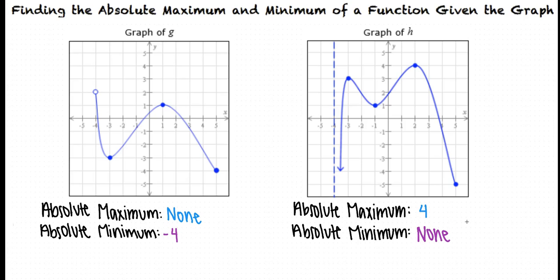The absolute maximum is the greatest y-coordinate of any point on the graph, and the absolute minimum is the least y-coordinate of any point on the graph. The graph may not have an absolute maximum or minimum if the function approaches positive or negative infinity on either end, or if the graph contains a hole which has a y-coordinate that is greater or lesser than the y-coordinate of any other point on the graph.